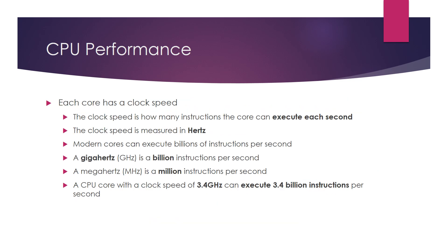Clock speed is how many instructions a core can execute per second, measured in hertz. Modern cores can execute billions of instructions per second. A gigahertz (GHz) is one billion instructions per second, and a megahertz (MHz) is one million instructions per second. For example, a CPU core with a clock speed of 3.4 GHz can execute 3.4 billion instructions per second.